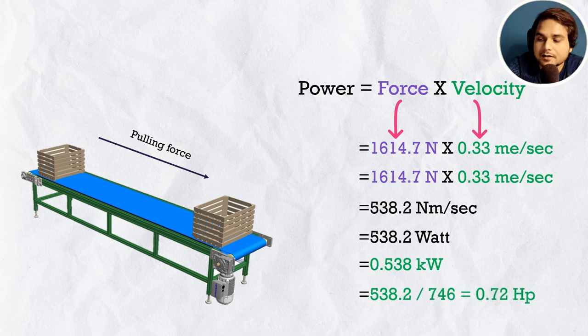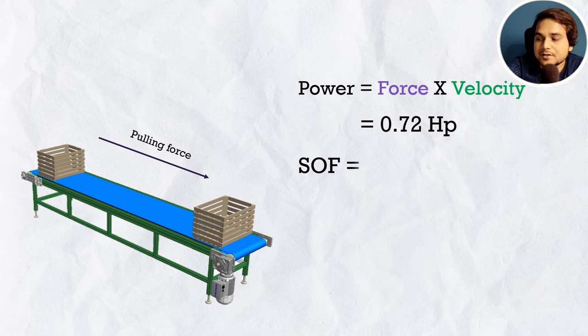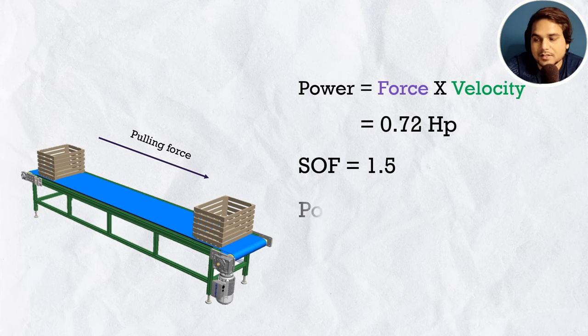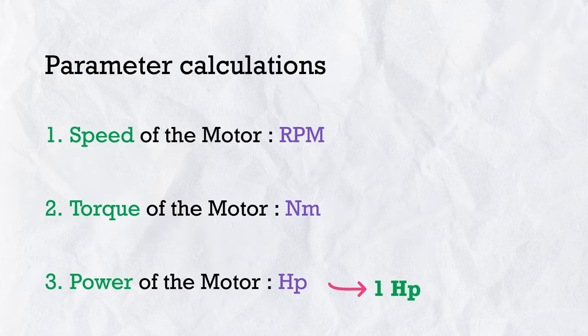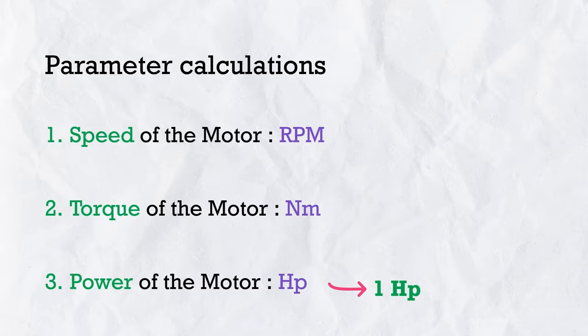On top of that, we apply a safety factor to account for motor efficiency. Using a safety factor of 1.5, the required motor power becomes approximately 1 hp. Notice that we have not considered the roller diameter at all in this power calculation.